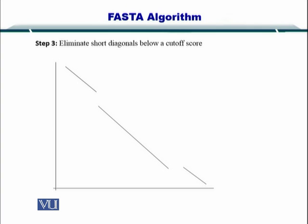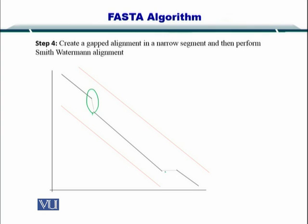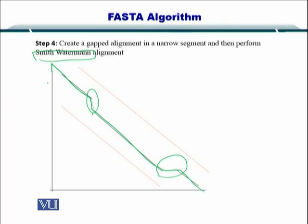So how do we do that? By removing the shorter diagonals and setting a cutoff score. So in the end, you only have a very clean set of diagonals. And then you join them using the Smith-Waterman algorithm here. And then you have a very nice alignment to finish the job.